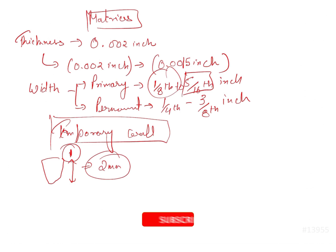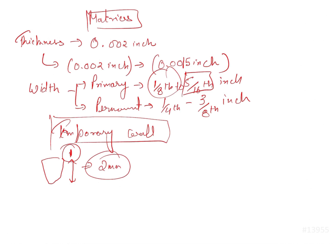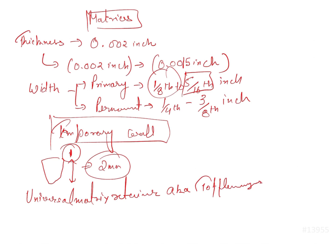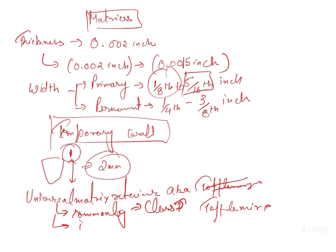The universal matrix band retainer is also known as the Toffelmire retainer, which is given in the figure. This retainer is ideal when three surfaces — mesial, mesiocclusal, and distal — are prepared. It is also commonly used for two-surface Class 2 restorations where two surfaces are lost, and it is ideal when three surfaces are also lost.